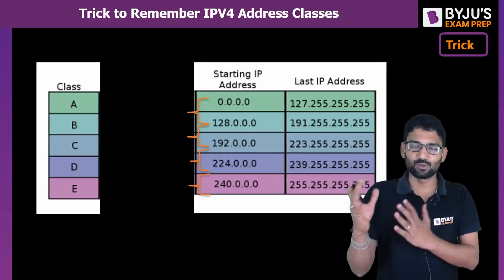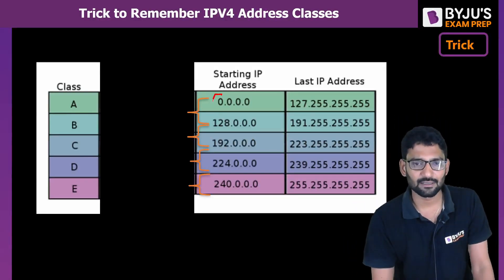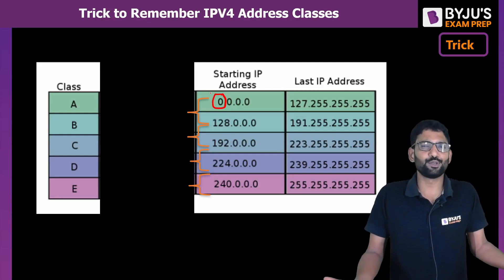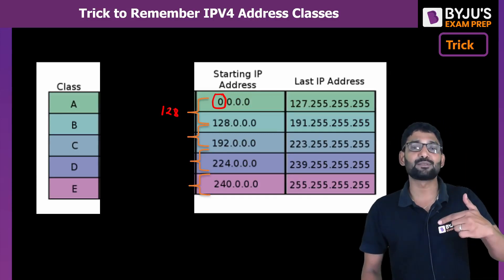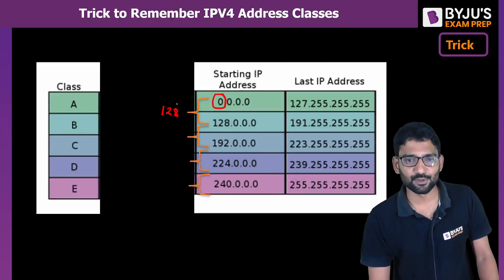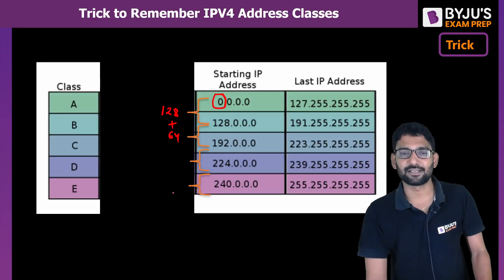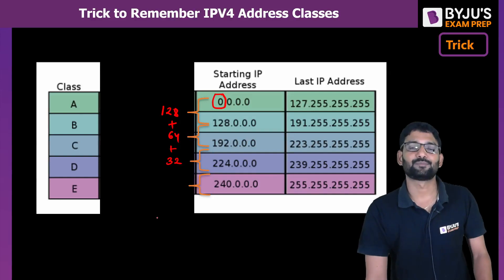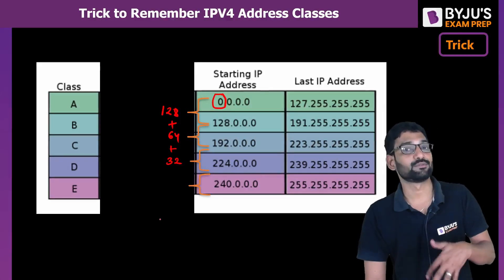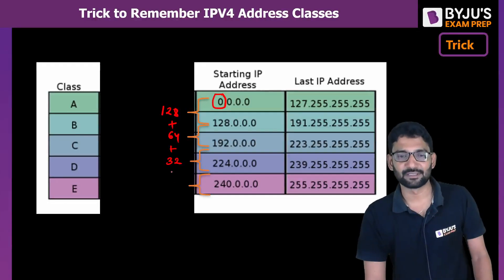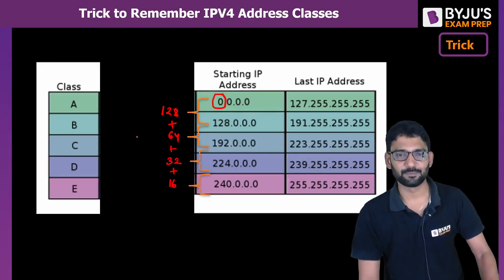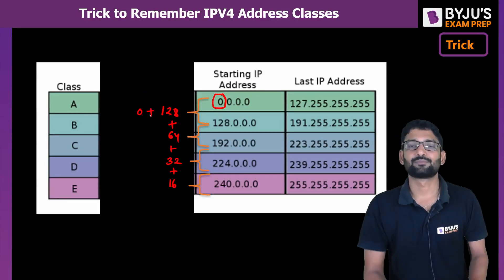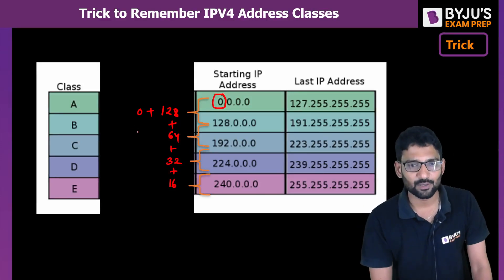The trick is: for Class A, remember 0. Add 128 to it — you get the Class B starting number, 128. Add 64 to that — you get the Class C starting number, 192. Add 32 to that — you get 224, the Class D starting number. Add 16 to that — you get 240, the Class E starting number. So: 0, +128 → 128, +64 → 192, +32 → 224, +16 → 240.